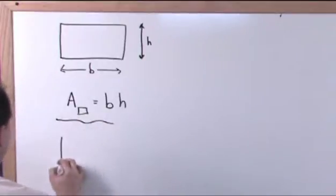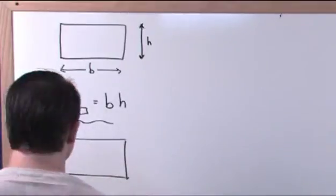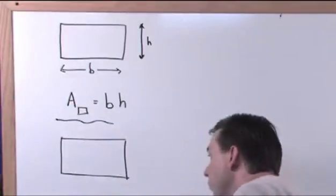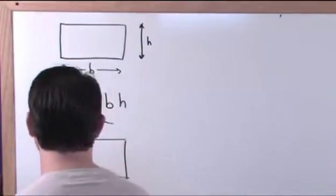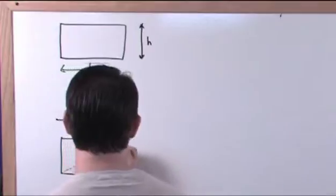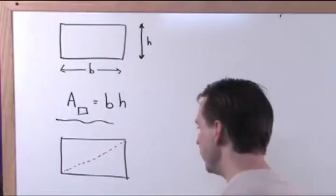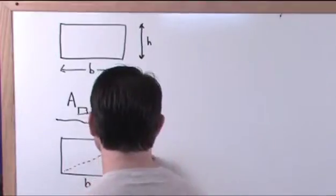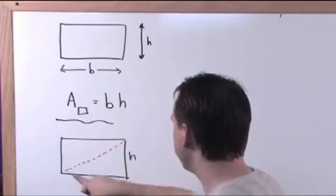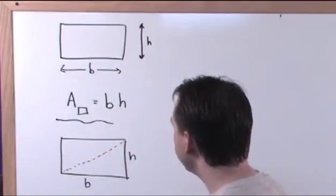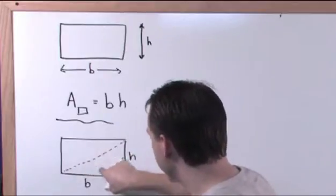Now let's draw this rectangle one more time and split it up. We're going to draw a diagonal right here. You know that this is the base and you know that this is the height. Now look what we've done — we've formed two triangles just by drawing a diagonal.